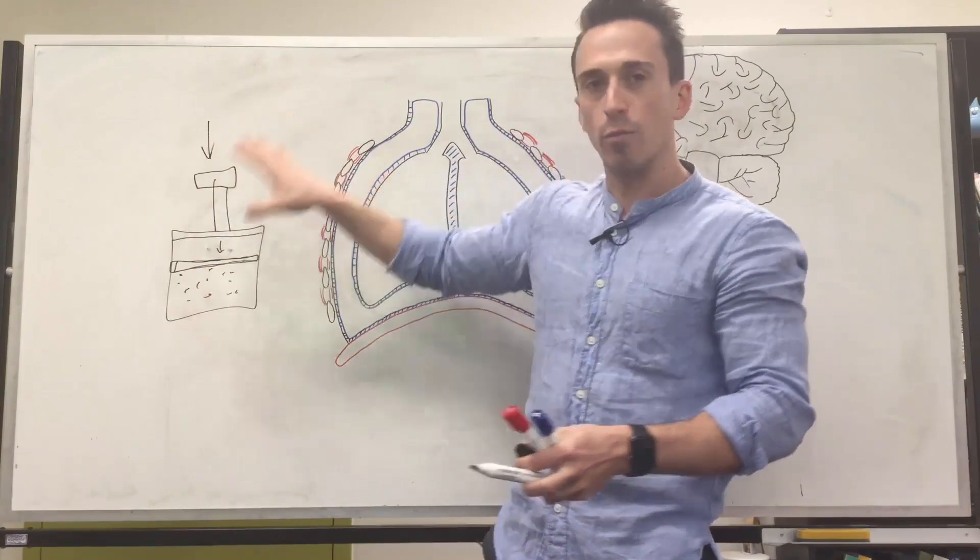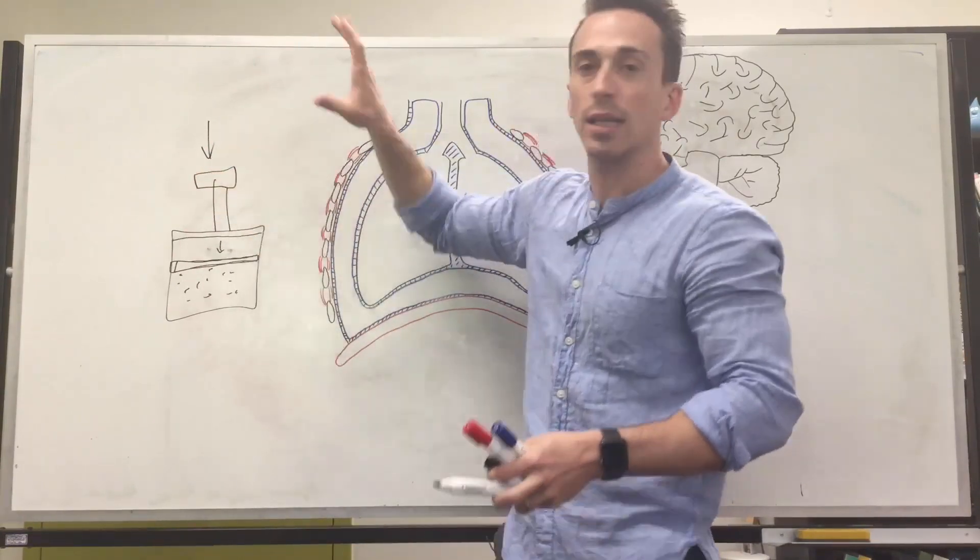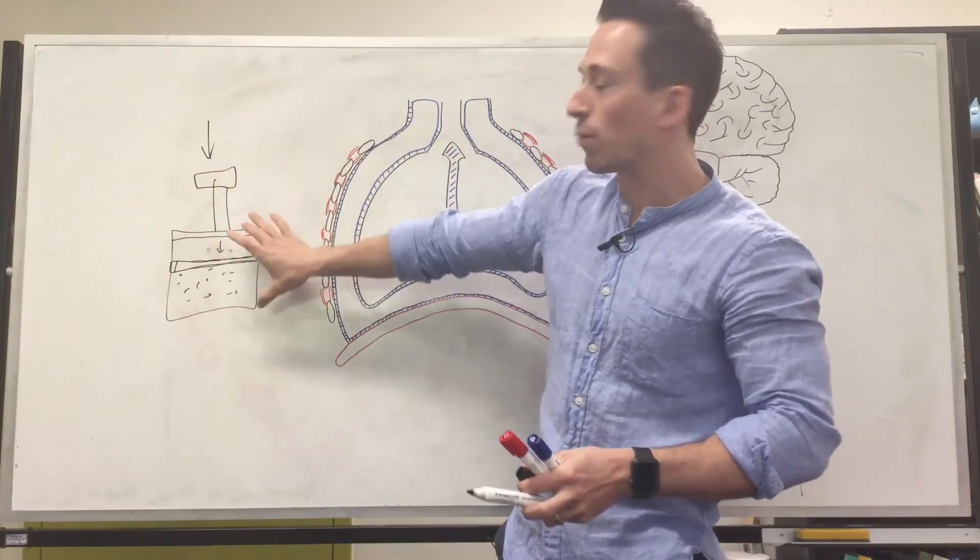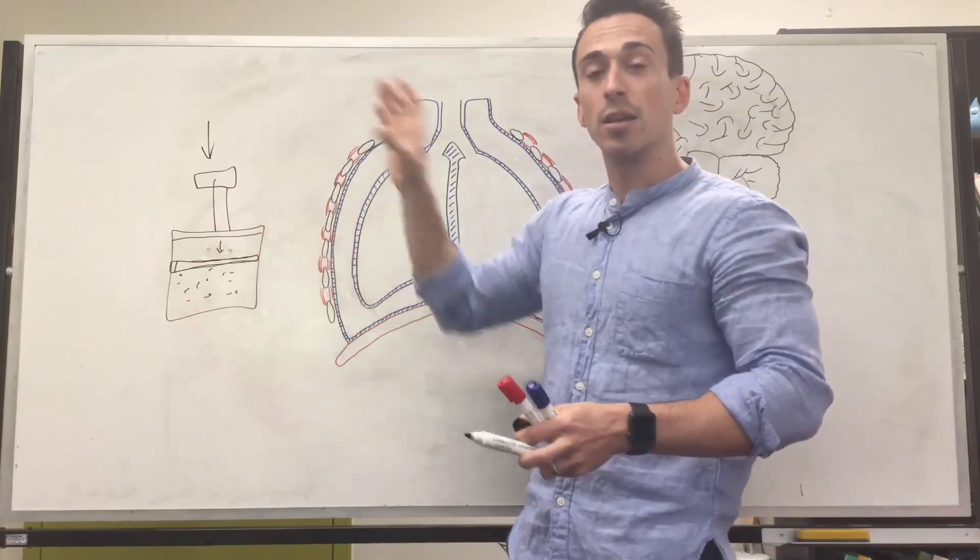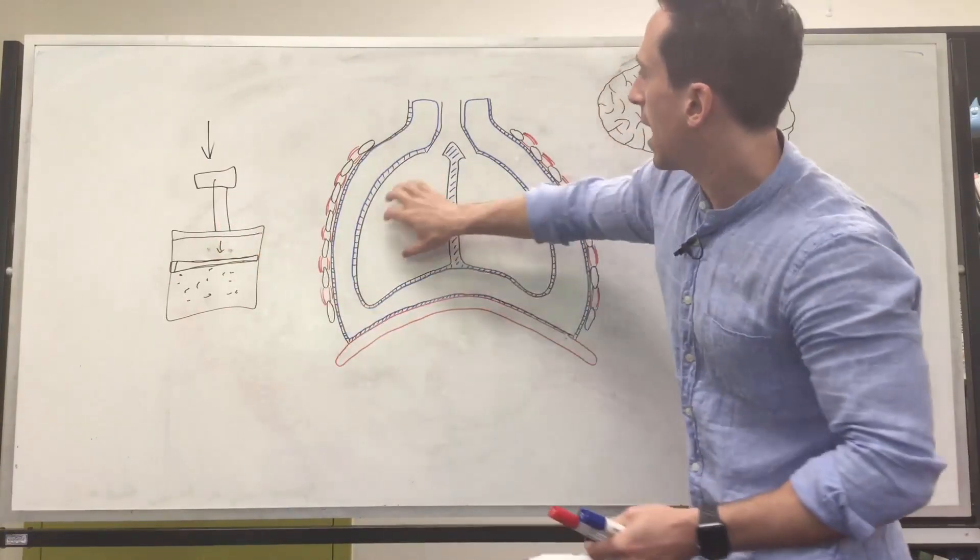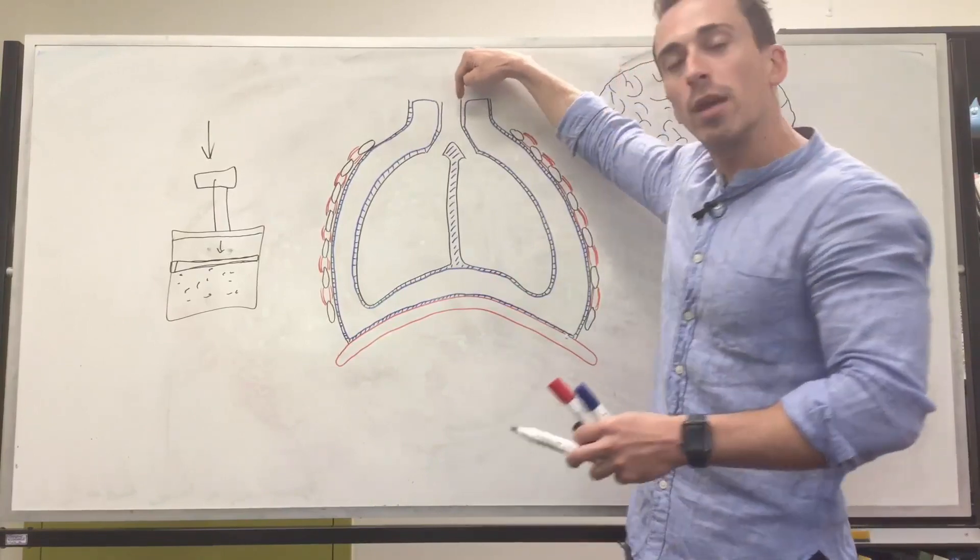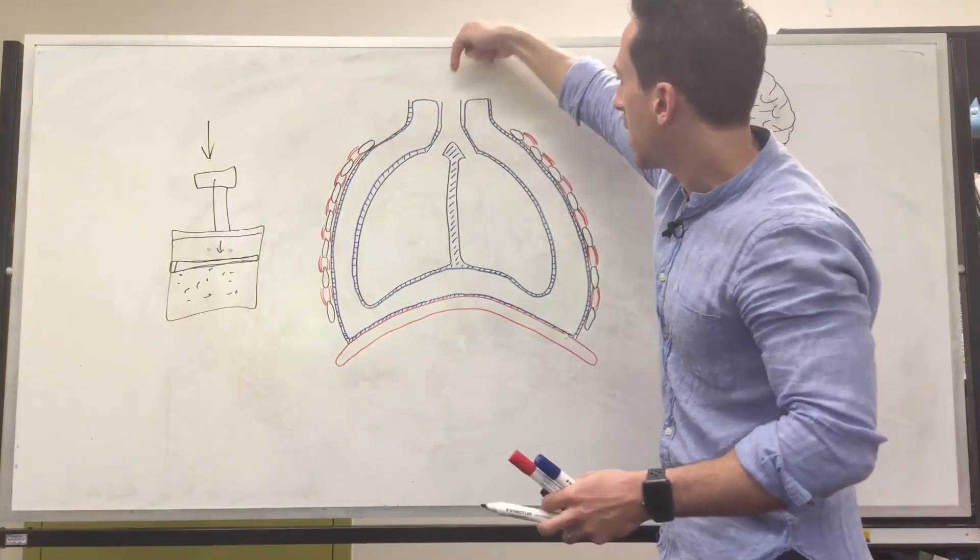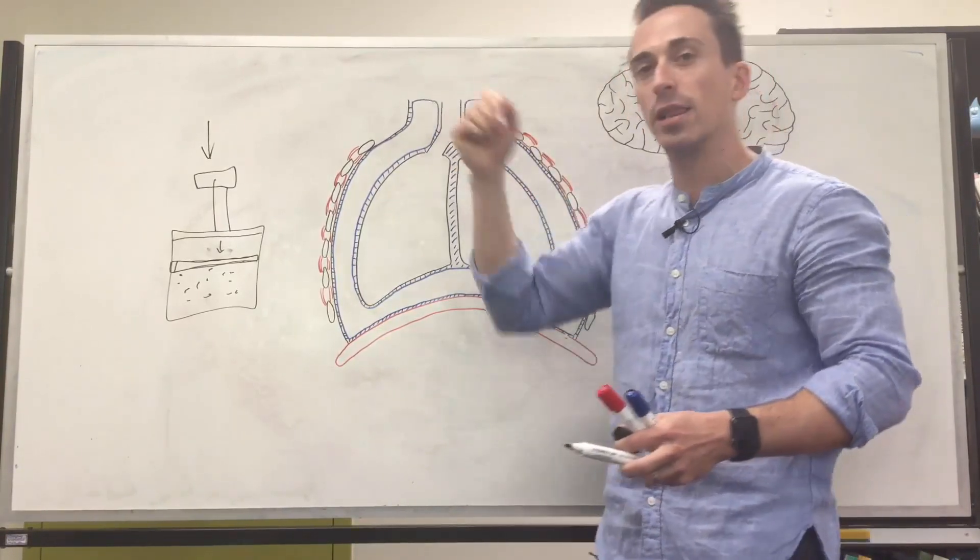Now, why is this important for breathing? Because our lungs are basically acting like this syringe or piston, right? So think about it. What we've got is our lungs and we've got that tube that brings air in, that's the trachea and the air will come into our lungs and come out of our lungs.